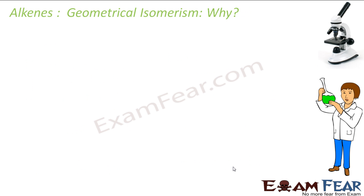Now the question is, why should we study geometrical isomerism for alkenes? Because there is a new topic of geometrical isomerism we are introducing for alkenes. Till now we have talked about structural isomerism. So we have geometrical isomerism also in alkenes. We have talked about geometrical isomerism in the previous chapter — where we had cis and trans isomerism. And they have different properties. So why should we study geometrical isomerism for alkenes? When we talked about alkanes, we never talked about geometrical isomerism, only structural. So what forced scientists to introduce the geometrical isomerism term for alkenes? Let's see.